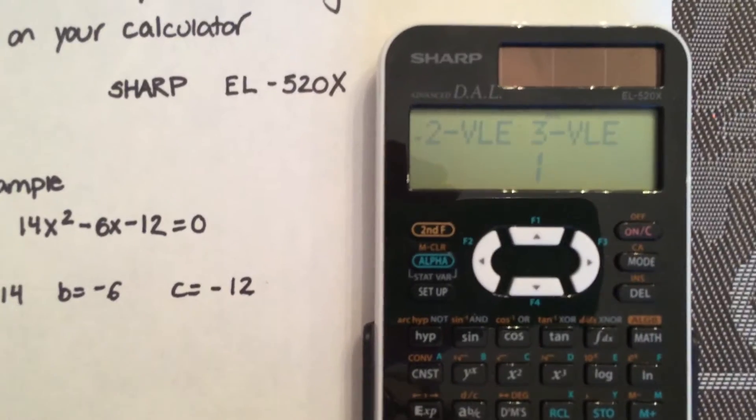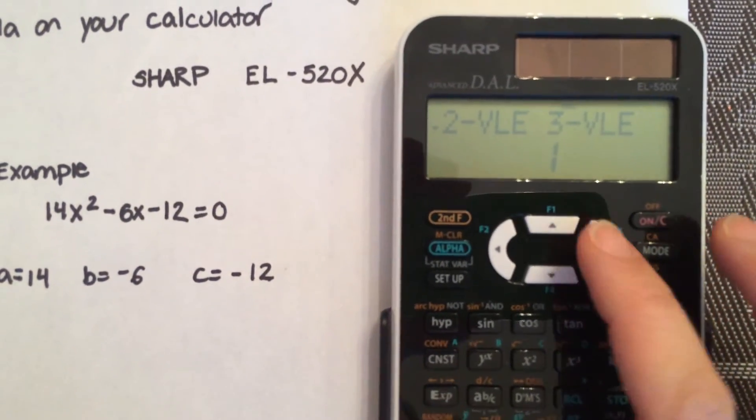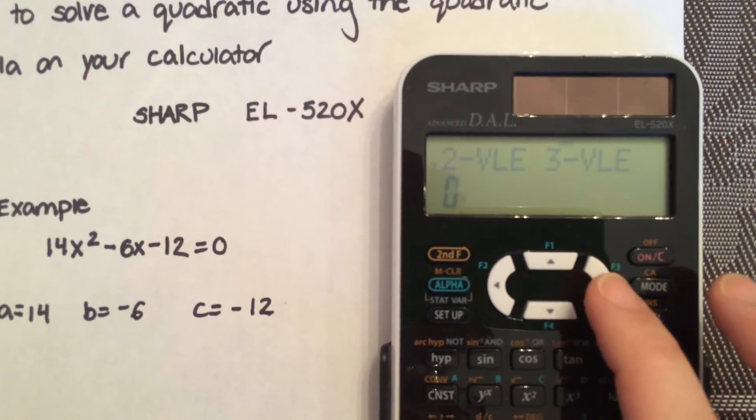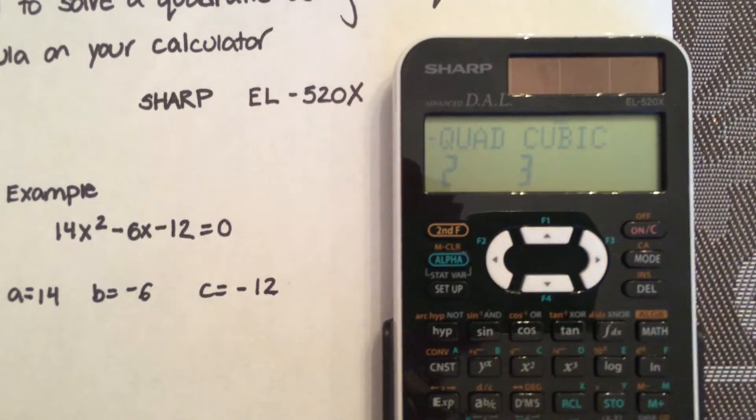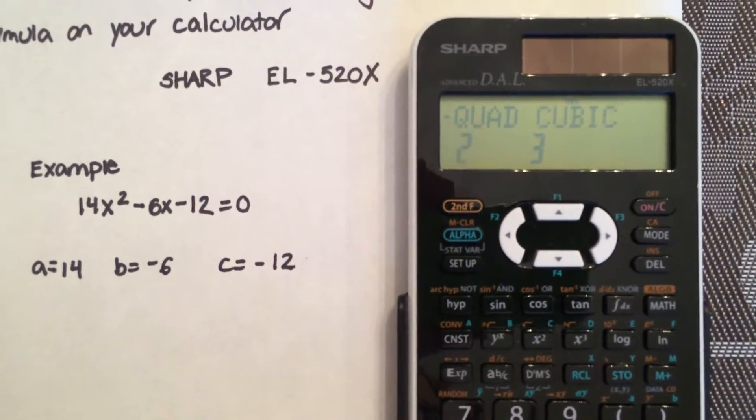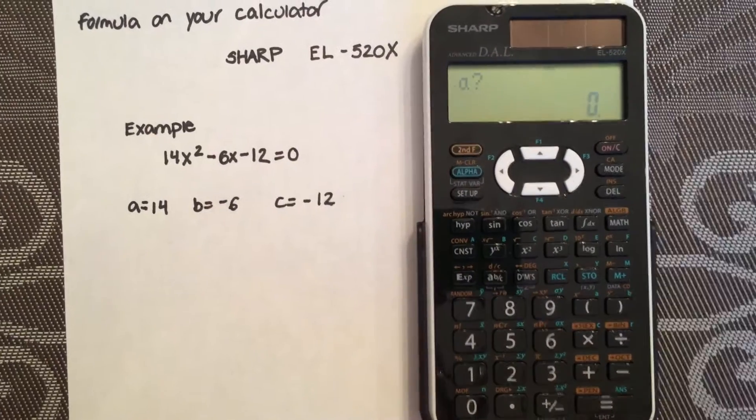Now again, you're going to see this on your screen. Scroll to the right twice until you see quadratic. You're going to select 2 for quadratic.